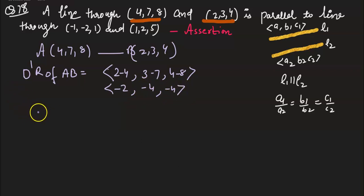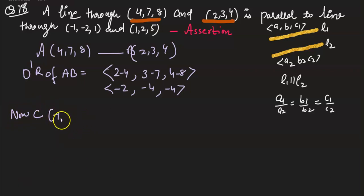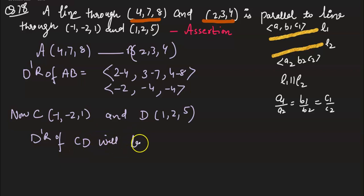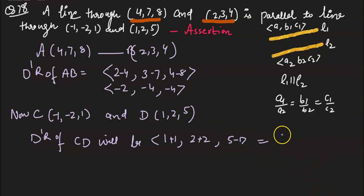Similarly, C point is (minus 1, minus 2, 1) and D point is (1, 2, 5). Direction ratios of CD will be: 1 plus 1, 2 plus 2, and 5 minus 1 — so the answer is 2, 4, 4.